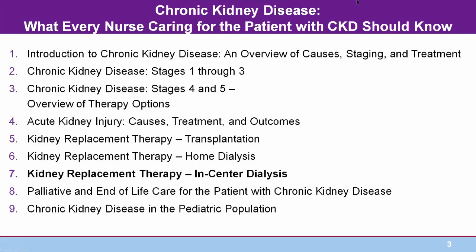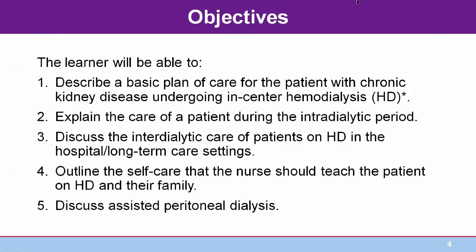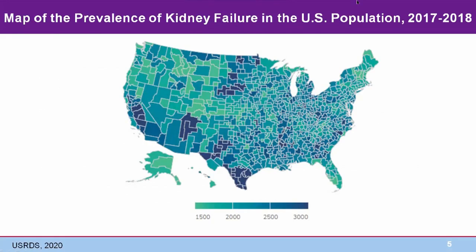The following objectives will guide this module about in-center primarily assisted hemodialysis. At the end of this module, you'll be able to describe a plan of care for the patient with kidney failure undergoing in-center hemodialysis, explain the care of the patient during the dialysis procedure, discuss the care needed between dialysis treatments for hospitalized or long-term care patients, outline the self-care that the nurse needs to teach the outpatient on hemodialysis and his family, and briefly discuss assisted peritoneal dialysis. The United States Renal Data System, the USRDS, is an amazing and reliable source of data about the demographics and care of patients with CKD.